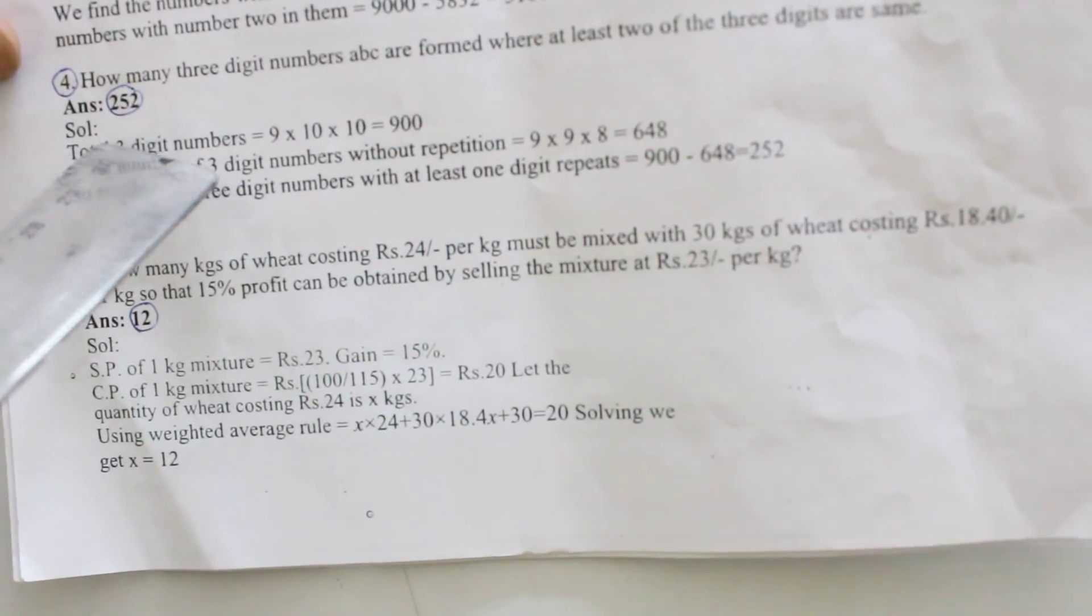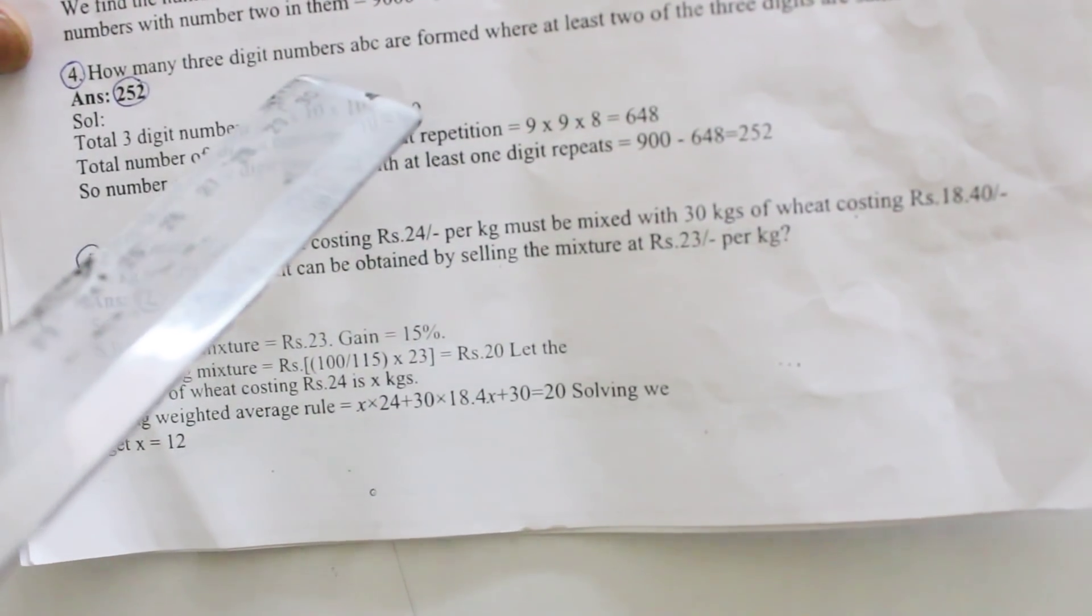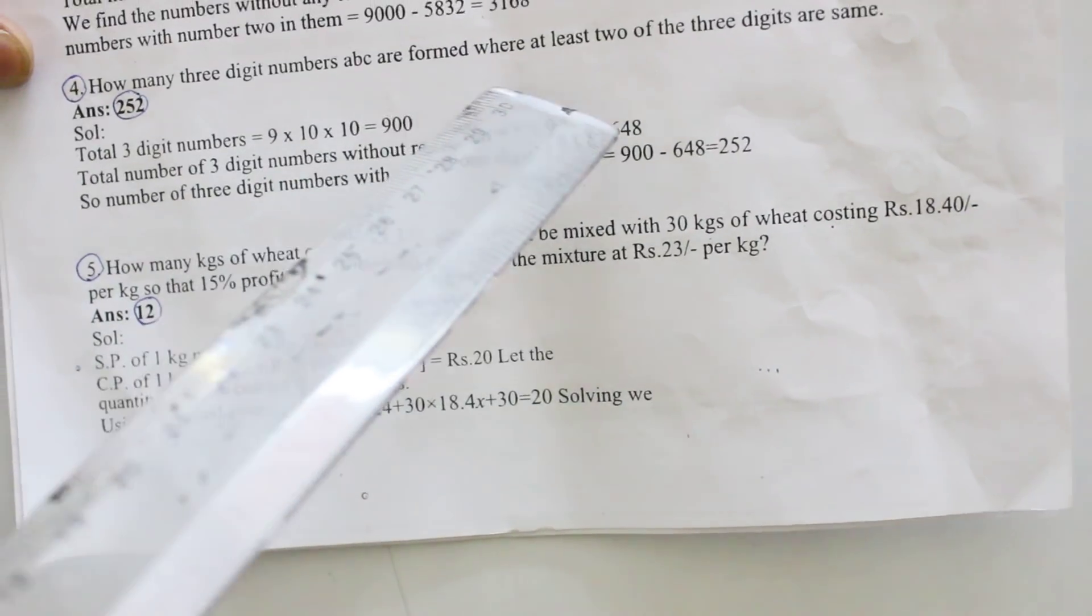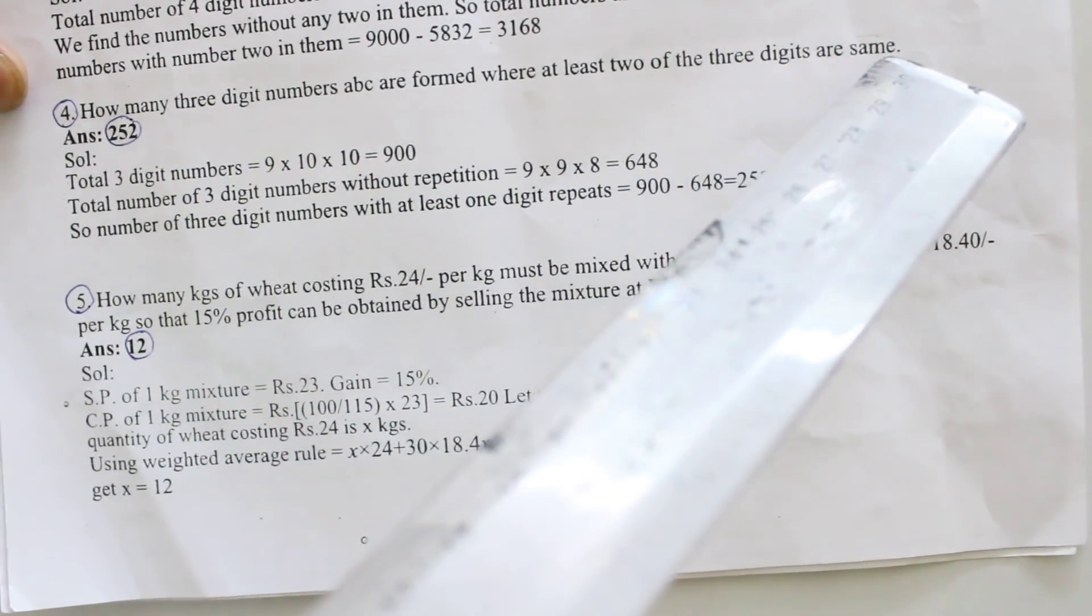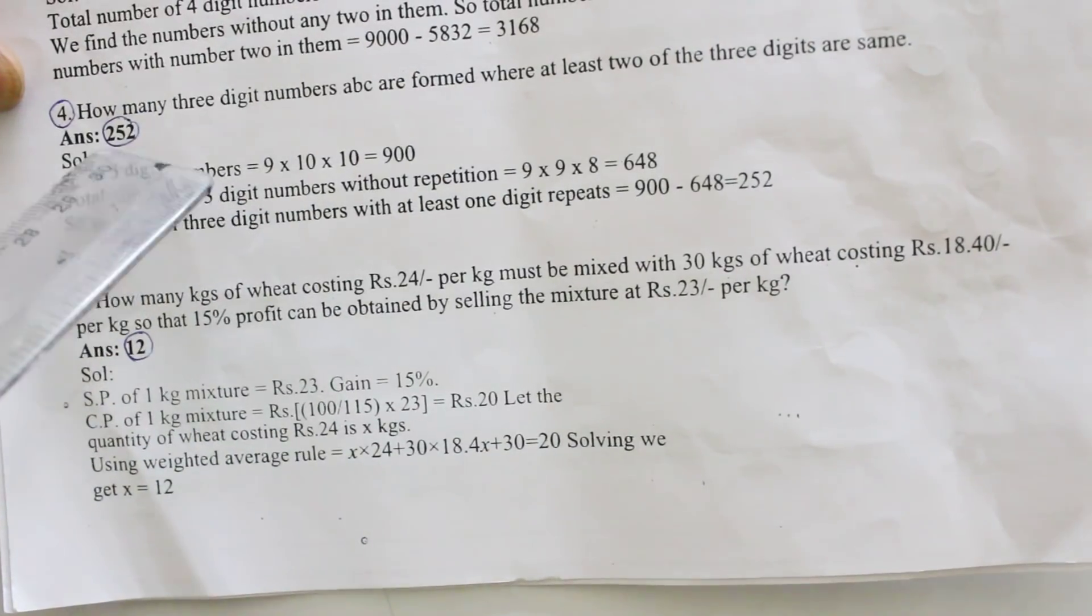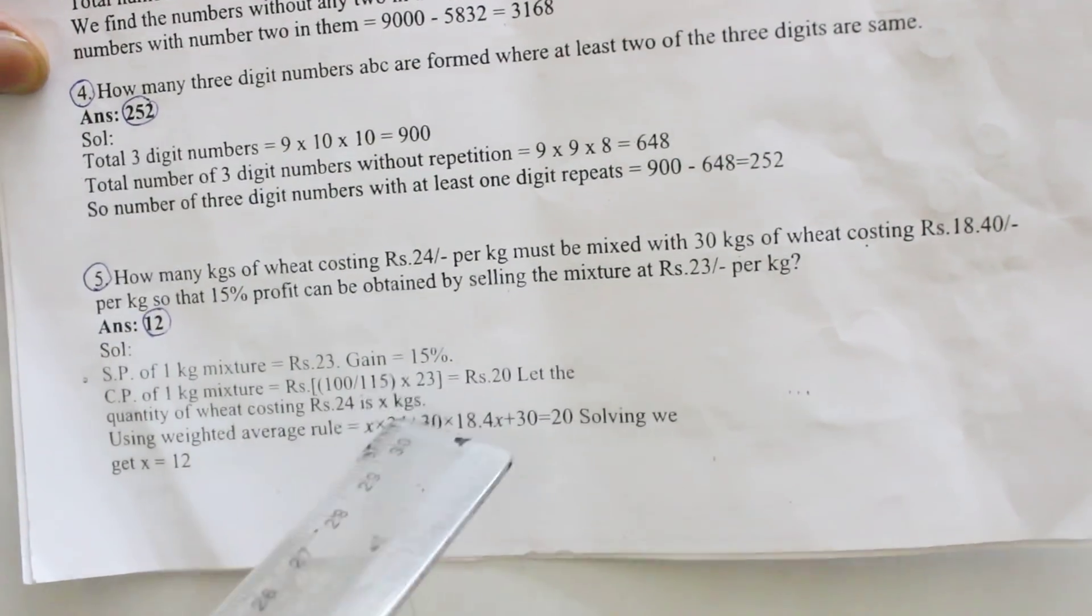Coming to the fourth question: How many 3 digit numbers ABC are formed where at least 2 of the 3 digits are same? Your answer is 252.